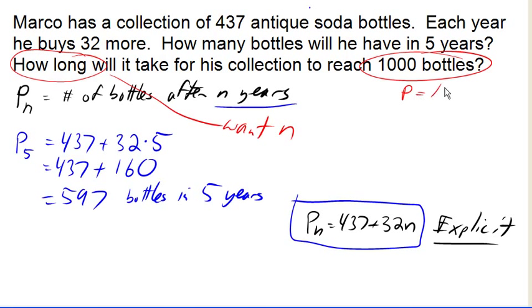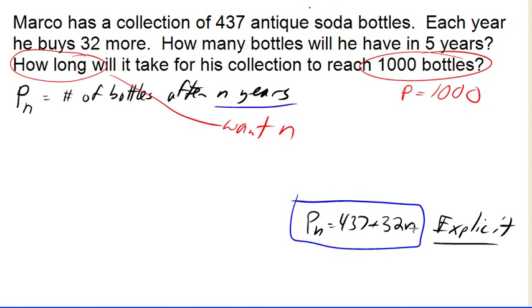In other words, when he has 1,000 bottles. In my equation here, I don't know the value for n, but I know the value for the population, for the number of bottles. So this 1,000 is going to go in for the population, for the number of bottles.